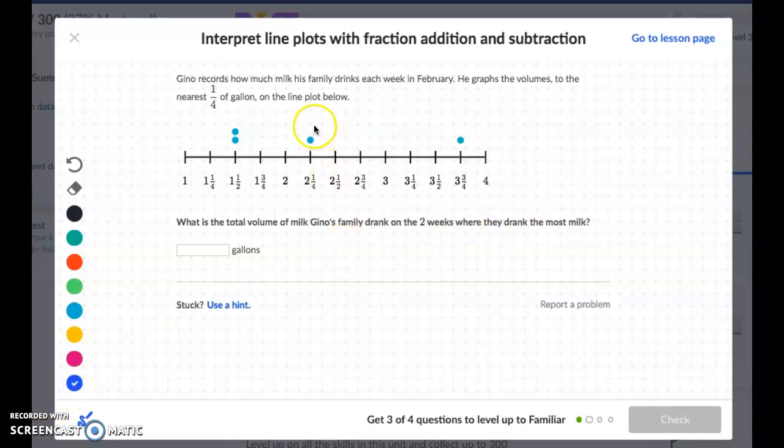Well the two weeks they drank the most milk are here and here because they drank 3¾ and 2¼. Now don't get confused with the fact that there's two dots here because we're still looking for the biggest, the most amount they drank. So we need to add 2¼ and 3¾.